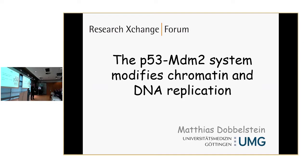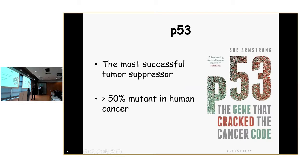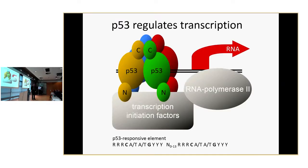p53 is known to be the most successful tumor suppressor, based on the fact that it is found mutant in about 50% or more of all human cancers. It is by far the most commonly mutated tumor suppressor gene — or any gene — in human cancer, making it a topic important for many people either working on cancer or having cancer.